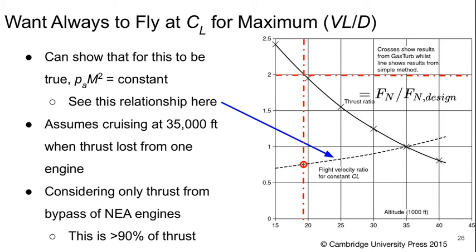We always want to fly at the C_L that gives us our maximum velocity times L over D, as we discussed earlier in the course. We can show for this to be true, the product of atmospheric pressure and Mach number squared should be a constant. We can actually see this relationship here versus altitude on this plot. This assumes that we're initially cruising at 35,000 feet when we lose thrust from one engine. We're only considering the thrust from the bypass of the new efficient aircraft engines, but that's more than 90% of the total thrust. The curve shows the scaling of the thrust based on that assumption, whereas the black X's show a more detailed modeling approach using a full engine simulation.